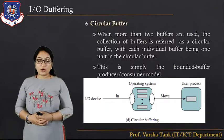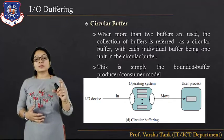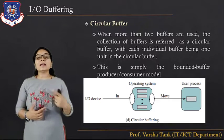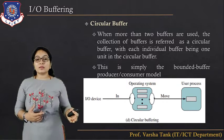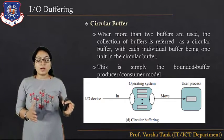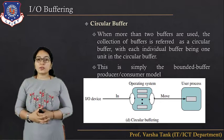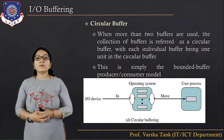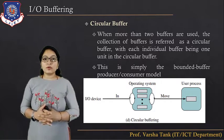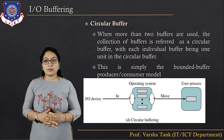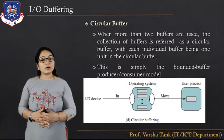Next is circular buffer, which you may know from the producer-consumer problem. In a circular buffer, once it reaches the end of its limit, the process stops, and when the buffer empties, it starts again. When more than two buffers are used, the collection of buffers is referred to as a circular buffer, with each individual buffer being one unit. This is the bounded buffer producer-consumer problem already discussed in this unit.